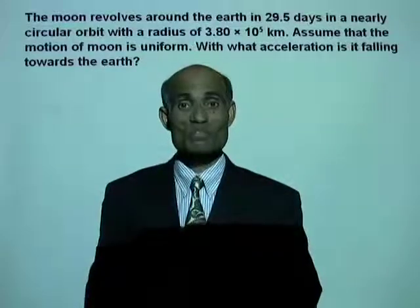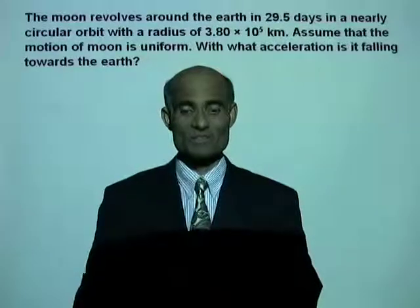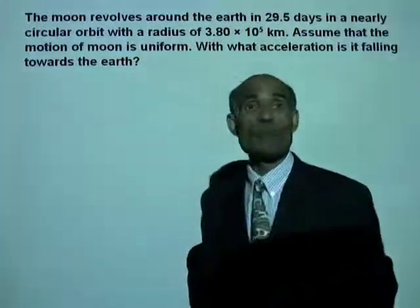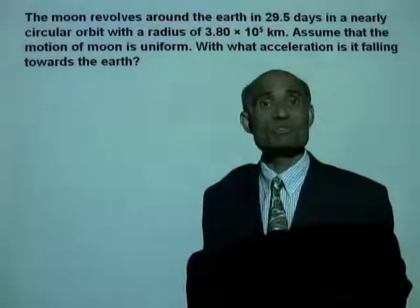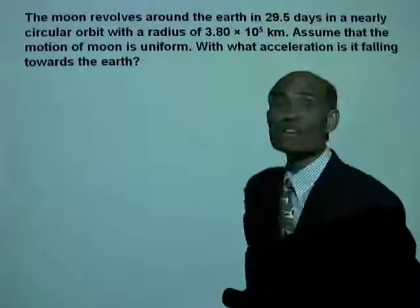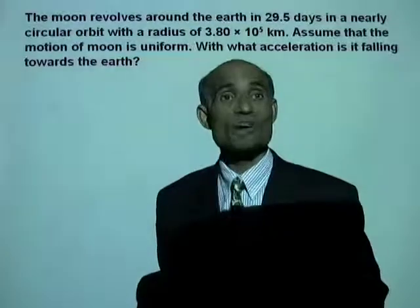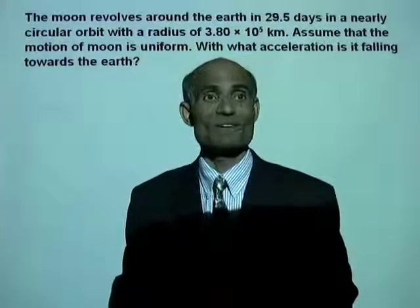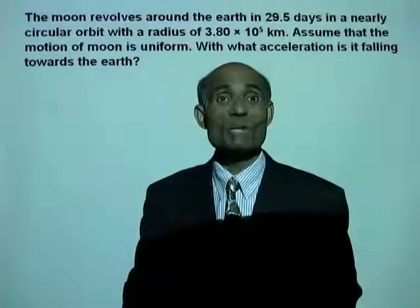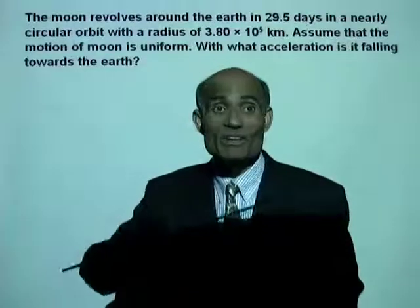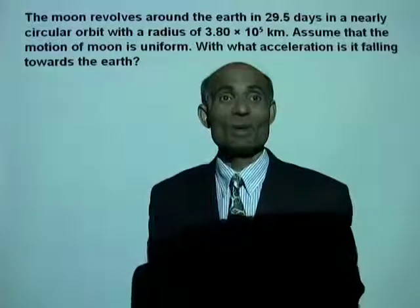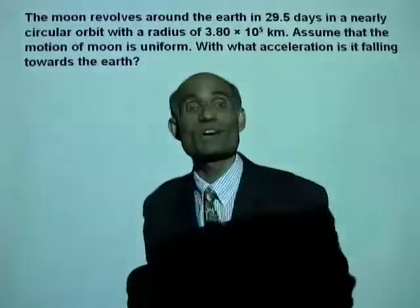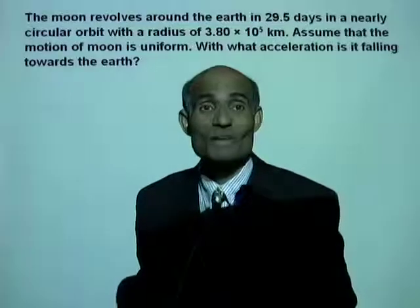We will now use the concepts of circular motion to solve problems. The Moon revolves around the Earth in 29 days in a nearly circular orbit with a radius of 3.8 times 10 to the power 5 km. Assume that the motion of the Moon is uniform, meaning its speed is uniform. With what acceleration is it falling towards the Earth? What is its centripetal acceleration?